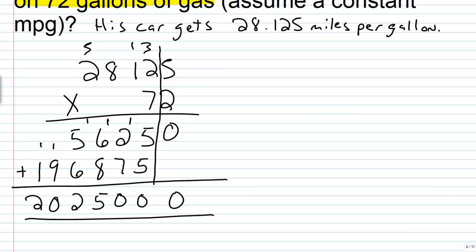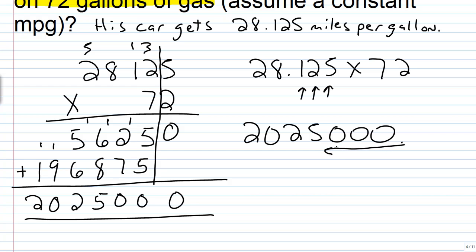Okay, but we know that in this problem, 28.125 times 72, there are one, two, three decimal places between factors. So that means in this number, the decimal point is going to go three places to the left. So basically it will go right here, and that means that I can just delete these zeros here because they don't add any value to the number. So we have 2,025.